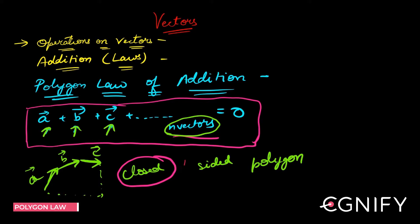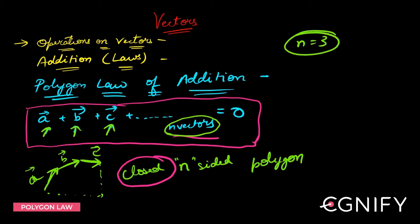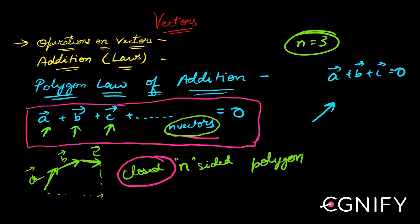This is the Polygon Law of Addition. Sometimes you can have a direct question based on this, so knowing this law lets you apply it straight away. Triangle Law is a special case where n is equal to three. Triangle Law says a-bar, b-bar, c-bar add up to zero, and when you join them from head to tail, they form a closed triangle.